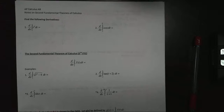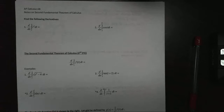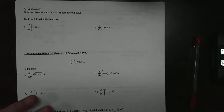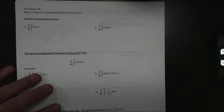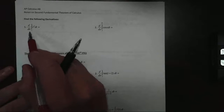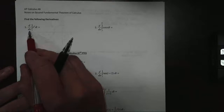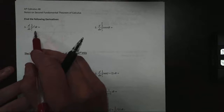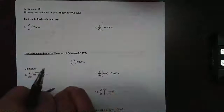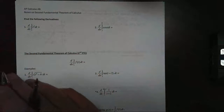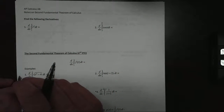Hi, today we're going to be looking at the second fundamental theorem of calculus. This is nothing more than a way that we can relate the derivative with a function. Now these are written a little bit different, so we have to be very careful with the order of operations. This is saying I'm taking the derivative of my antiderivative. Now remember, derivatives and antiderivatives are inverses of each other, so they cancel each other out.